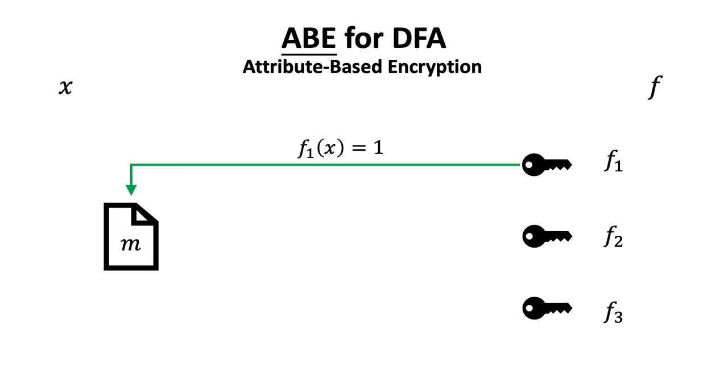When the attribute on the ciphertext side satisfies the policy on the key side, the key can be used to decrypt the ciphertext and recover message M, such as the key for F1.